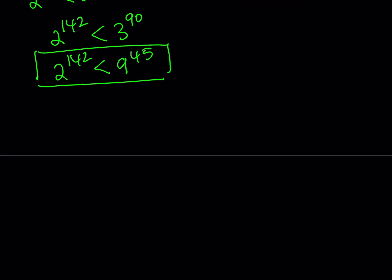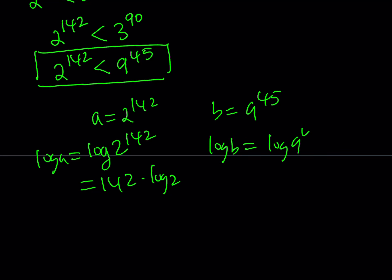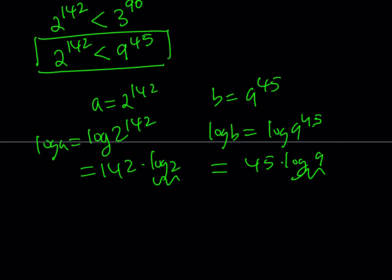Another alternative would be just calling this number A and then calling the other number B, and then just logging both sides in any base you want. If you do log A, you get 142 times log 2. If you log B, you get 45 log 9. Obviously, you can calculate these values using a calculator, but you're not allowed to use a calculator. So that's not a very good method.